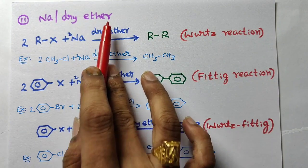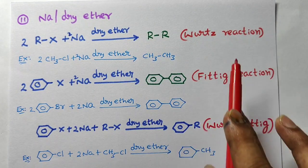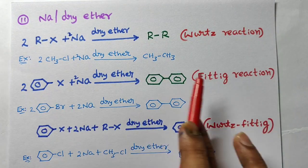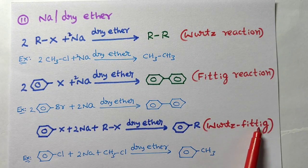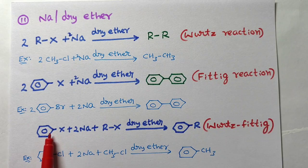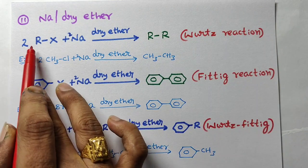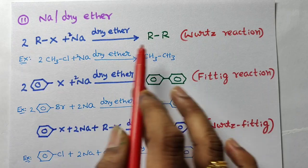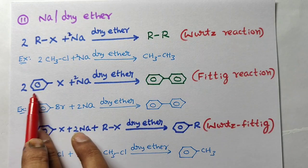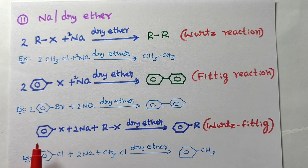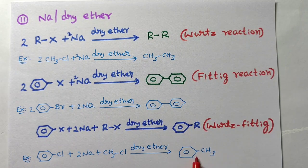Next reagent: sodium in dry ether, which is used in Wurtz reaction, Fittig reaction, and Wurtz-Fittig reaction. In the Wurtz reaction the reactant is alkyl halide; Fittig reaction uses aryl halide; Wurtz-Fittig uses one alkyl halide and one aryl halide. In the Wurtz reaction, two alkyl groups join to form an alkane. In the Fittig reaction, two aryl groups join to form diphenyl. In the Wurtz-Fittig reaction, one aryl and one alkyl group join — for example, toluene is formed.